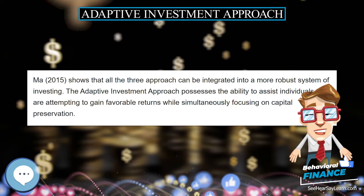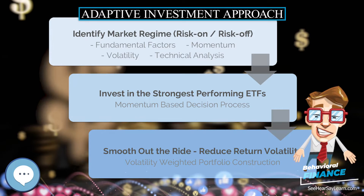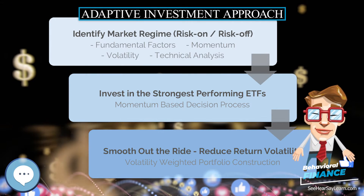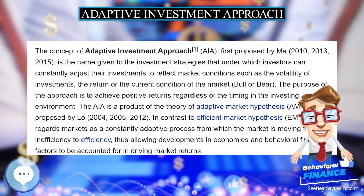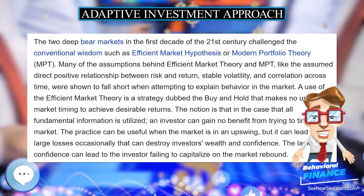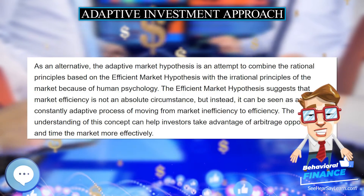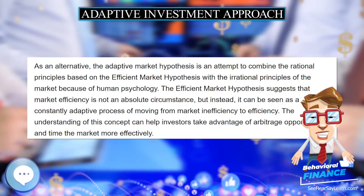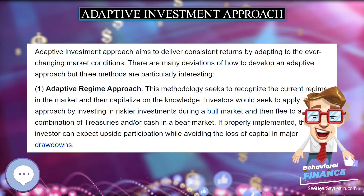The AIA is a product of the theory of Adaptive Market Hypothesis (AMH), proposed by Lo (2004, 2005, 2012). In contrast to the Efficient Market Hypothesis (EMH), AMH regards markets as a constantly adaptive process, moving from inefficiency to efficiency, thus allowing developments in economies and behavioral finance factors to be accounted for in driving market returns.